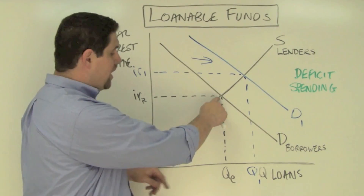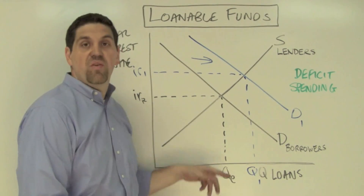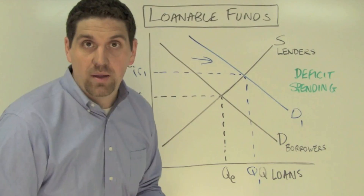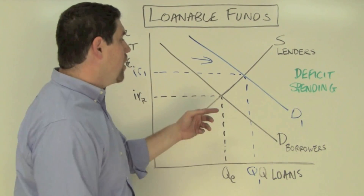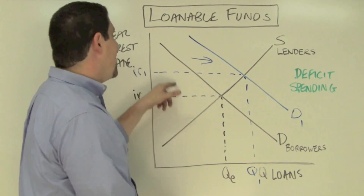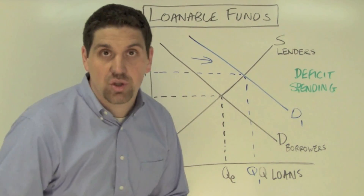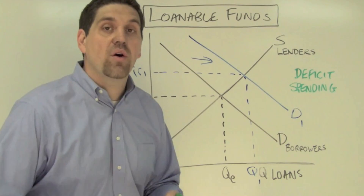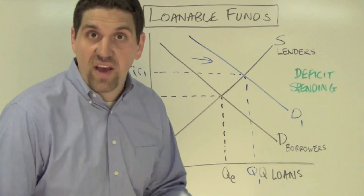This is the real interest rate and the quantity of loans before the government shows up and starts borrowing. When the government starts to borrow, it's going to increase the demand for loans and increase the real interest rate. Now what this does is it crowds out private sector investors.